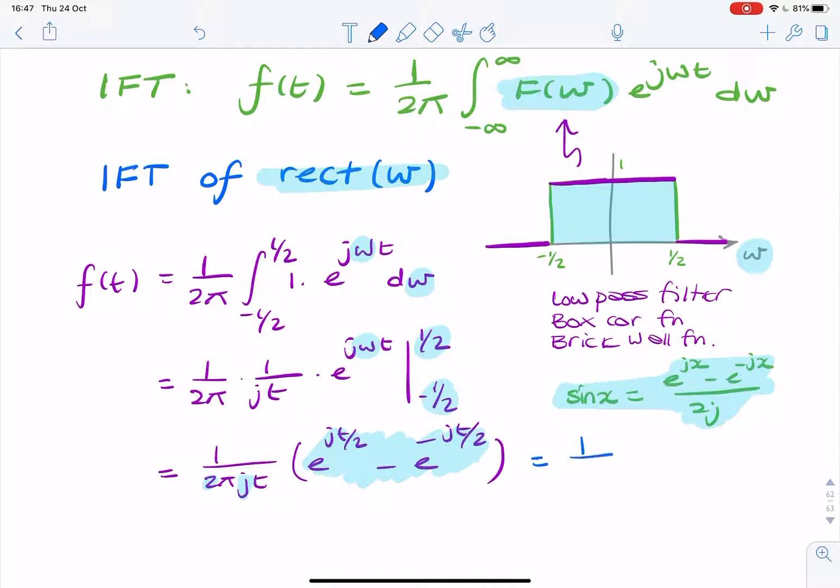So we have 1 over πt times sin(t/2). And again, we could leave it at that, but it doesn't look like a sinc function yet. And the reason is because here we have t/2, and here we only have t. So we could somehow manipulate the denominator here.